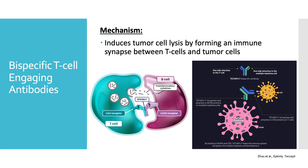Now that we've gone through those definitions, that will help you understand the mechanism of these bispecific T-cell engaging antibodies. They basically work on cancer cells by inducing tumor cell death by forming that immune synapse between the T-cells and tumor cells. The picture on the left is Epkinly — it links the B-cell through the CD20 receptor to the T-cell on the CD3 receptor, forming that immune synapse, causing release of pro-inflammatory cytokines and cell death. The photo on the right shows the T-cell binding the CD3 and binding the multiple myeloma cell via BCMA.